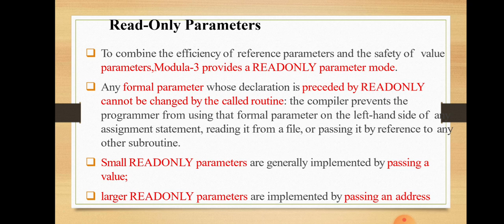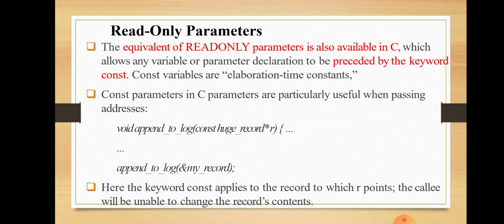In read-only mode, changes are not reflected in the actual or formal parameters. There are mainly two types of read-only parameters: small read-only parameters, which are implemented by passing a value, and large read-only parameters, which are implemented by passing an address. This read-only parameter behavior is seen in languages when we use the 'const' keyword, which means we are using read-only parameters.